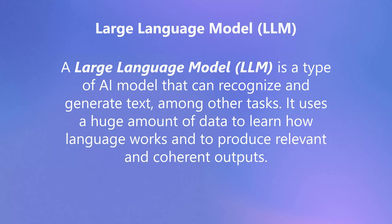Now we have these things called large language models — LLMs. These are algorithms trained on the internet. GPT-4 from OpenAI was trained on 175 billion parameters. Think about that: 175 billion little bits of information to get it to do all the amazing things it can do.